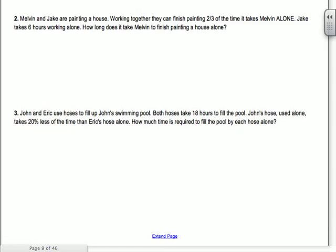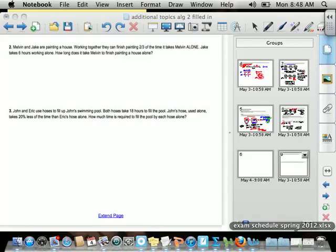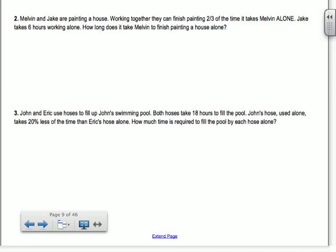All right, you guys try the next one. Oh, Melvin, you've been used a couple times now. Okay, Melvin and Jake are painting a house. Working together, they can finish painting two-thirds of the time. It takes Melvin alone. Jake takes six hours working alone. How long does it take Melvin to finish painting a house alone? Okay, so go ahead and set it up and see what you get. Kind of a tricky one. All right, so we're going to let X equal the amount of time it takes Melvin alone. So together, it says they take two-thirds of the time it takes Melvin alone. And it says Jake takes six hours working alone. So I'm going to have one over six. So that's the amount of work that Jake can get done in one hour. One-sixth of the job, right? So Melvin alone is X. So one over X.